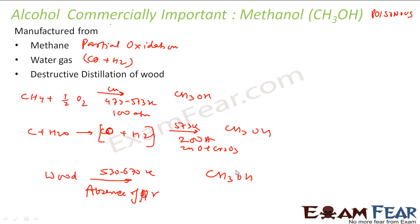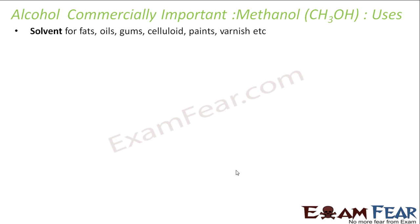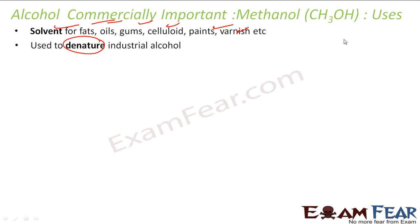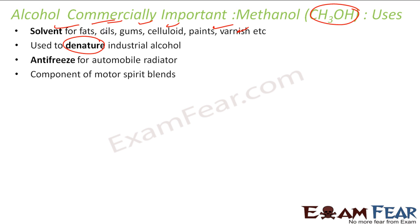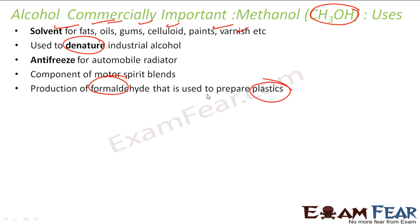So those are three ways of preparing methanol. It is used as a solvent for paints, varnishes, shellac, gums, oils, fats, etc. It is used to denature industrial alcohol — that is, to make it unfit for drinking — because it is poisonous. Methanol is also used as antifreeze for automobiles, as a component of motor spirits, and to manufacture formaldehyde, which is used to create plastics.